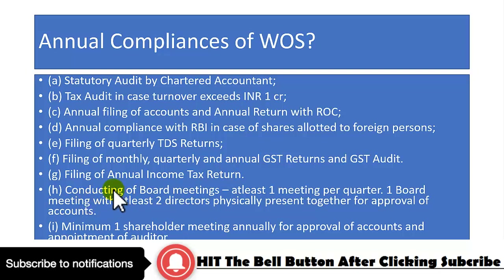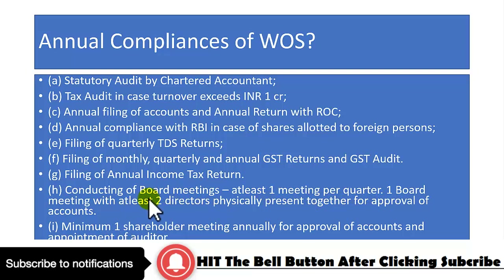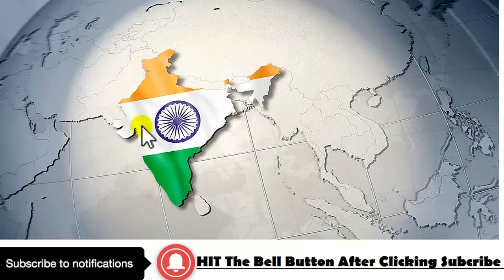Board meetings must be conducted — at least one meeting per quarter. One board meeting must have at least two directors physically present together for approval of accounts; this can be done with the help of a company secretary. A minimum of one shareholder meeting annually is required for approval of accounts and appointment of the auditor, also through a company secretary. India is a landmark opportunity if you want to establish your business here.